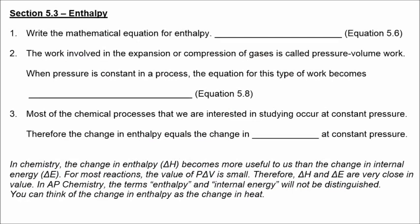Section 5.3 deals with enthalpy. Equation 5.6 gives the mathematical equation for enthalpy: H equals the internal energy plus pressure times volume. The work involved in expansion or compression of gases is called pressure-volume work. When pressure is constant, work equals negative P times delta V. Since most chemical processes in chemistry occur at constant pressure, the change in enthalpy is essentially the change in heat. So in chemistry, the change in enthalpy is more useful than the change in internal energy — you can think of the change in enthalpy as simply the change in heat.